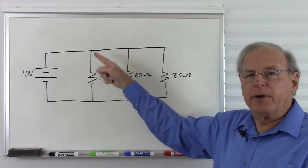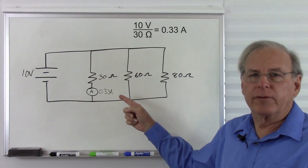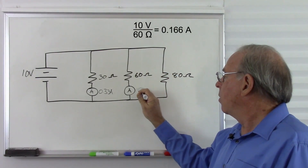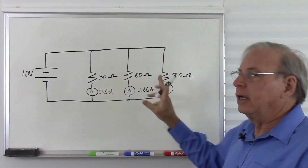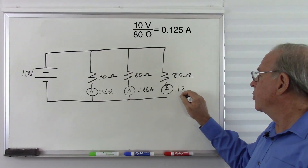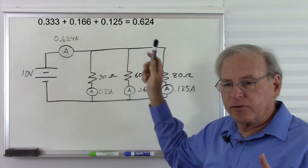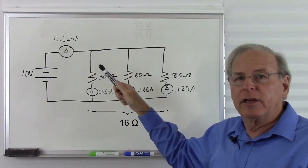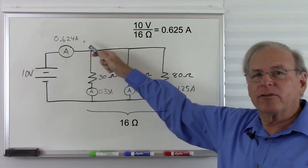If we add a battery voltage, we can calculate the current through each leg and confirm this. So 10 volts across 30 ohms gives us 0.33 amps. Here we have 10 volts across 60 ohms — we double the resistance, so we have half the current: 0.166 amps. And finally, 10 volts across 80 ohms gives us 0.125 amps. Kirchhoff's current law says we add these currents together: 0.624 amps. So with 16 ohms and 10 volts we should get 0.624 amps — and 10 volts divided by 16 ohms equals 0.625 amps. Considering rounding errors, that is correct.